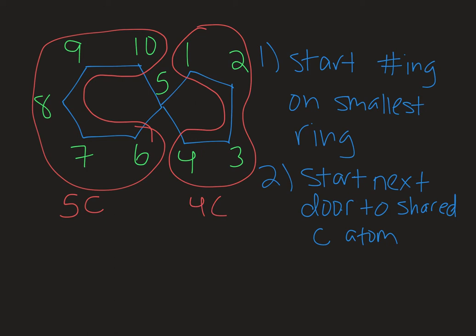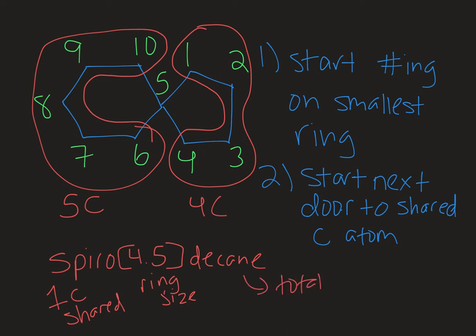So when I name this compound it's going to be spiro and then brackets, and then because we're doing spiro we go small and then big, so opposite what you do with a bicyclic. So four period five and bracket and then right up against that bracket decane. So spiro tells me that I have one carbon atom that is shared in my polycyclic system. The four and the five tell me about the relative ring size for my compound and then the decane tells me the total number of carbons. So in this case I have ten total carbons.